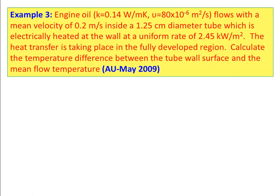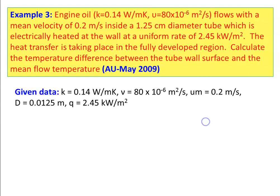Example 3: Engine oil with thermal conductivity k = 0.14 W/m·K and kinematic viscosity ν = 18 × 10⁻⁶ m²/s flows at 0.2 m/s inside a 1.25 cm diameter tube electrically heated at a uniform heat flux of 2.45 kW/m². Heat transfer occurs in the fully developed region. Calculate the temperature difference between the tube wall surface and mean flow temperature.